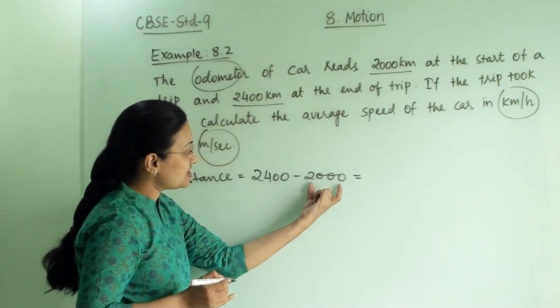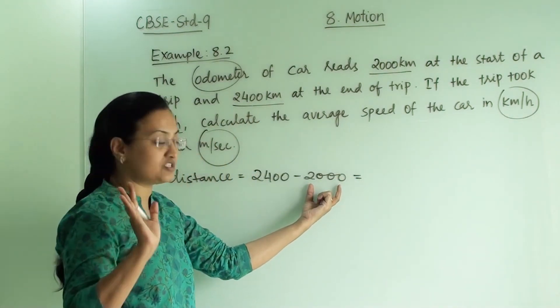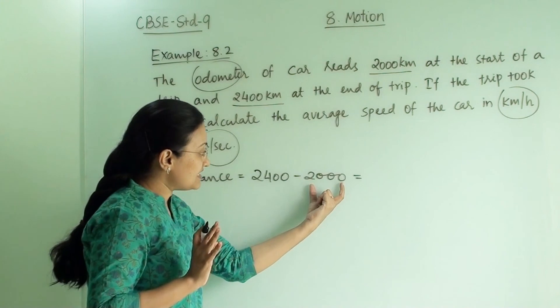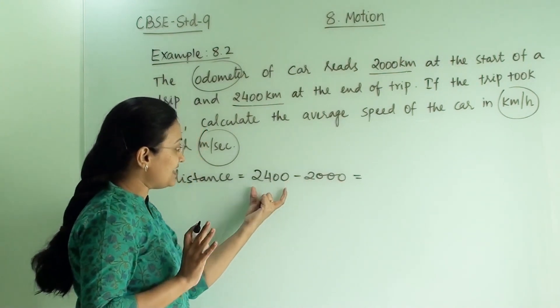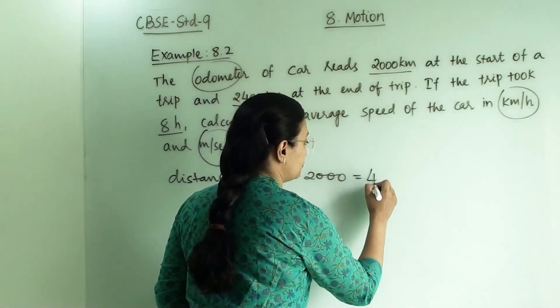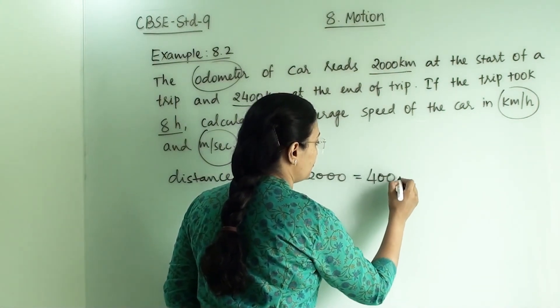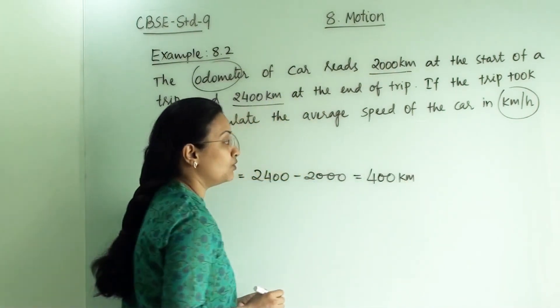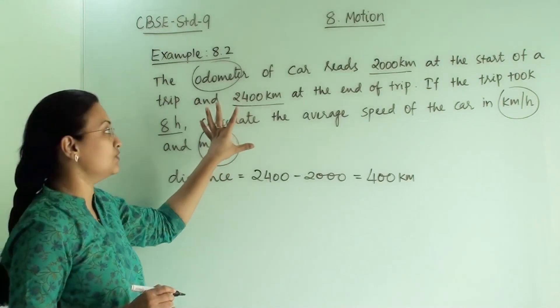Because this much distance has already been covered in previous journeys. Now it has started at this point and ended at this point. So 400 km is the total distance covered for this particular trip.